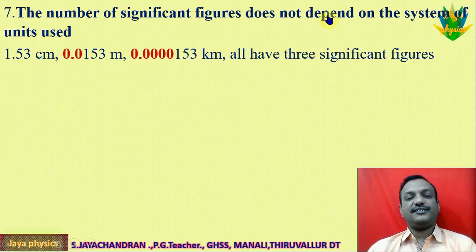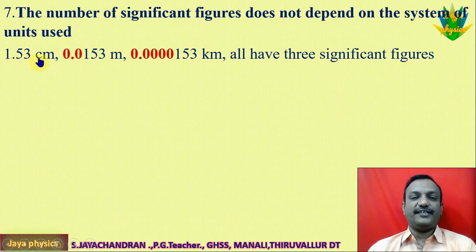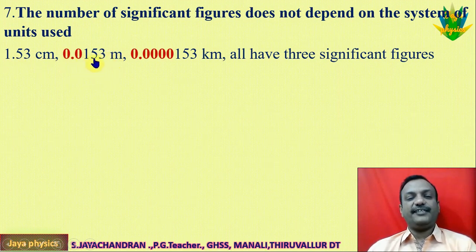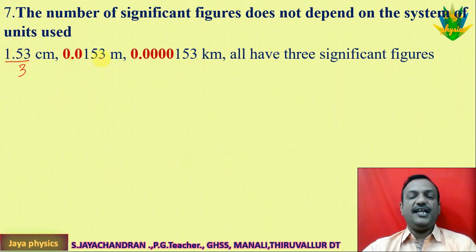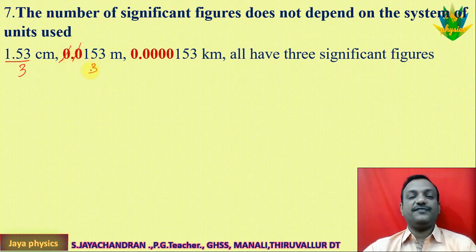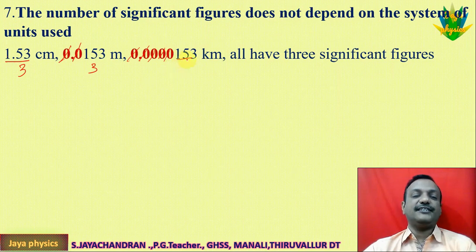The number of significant figures does not depend on the system of units. If we use 1.53 centimeters, that has 3 significant figures. If you convert to meters it becomes 0.0153 — still 3 significant figures. If you convert to kilometers it becomes 0.0000153 — still 3 significant figures. The meaningful digits remain the same regardless of unit conversion.